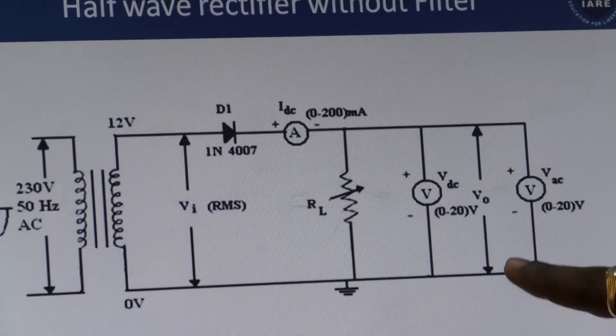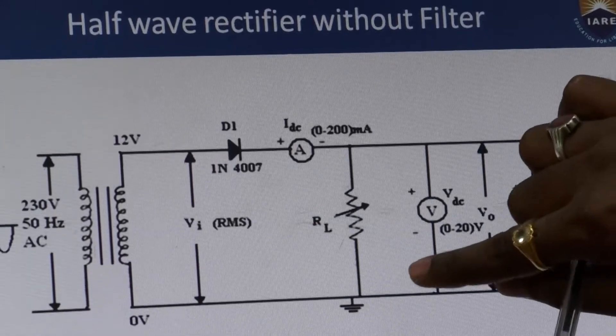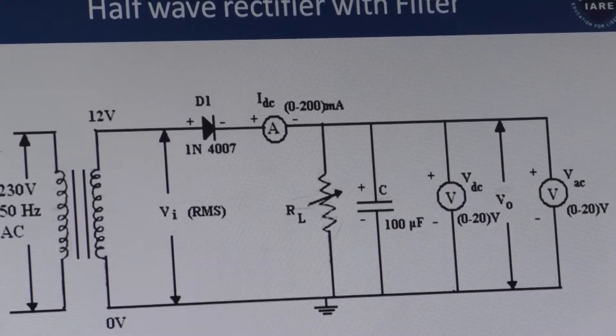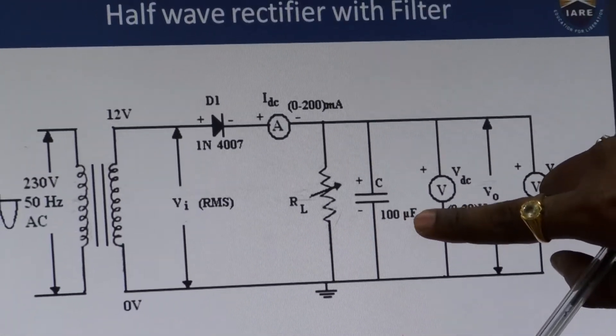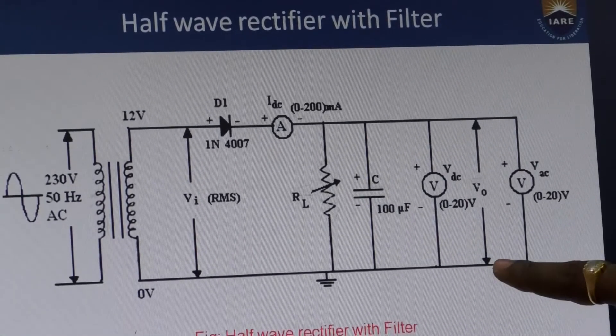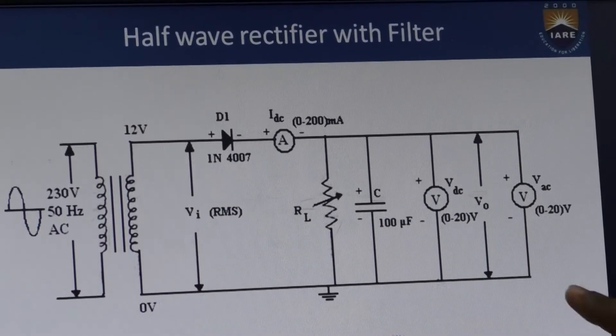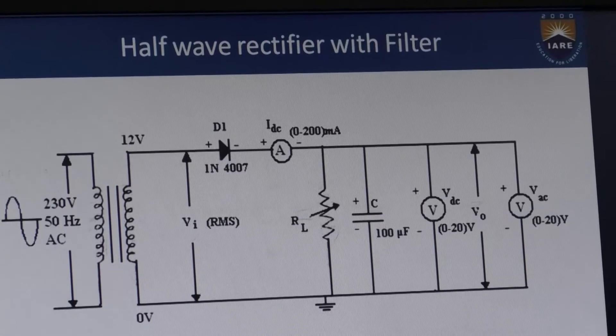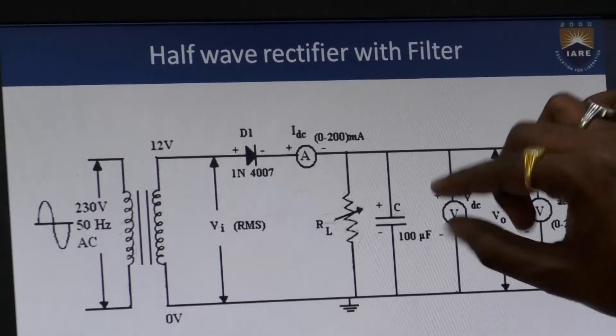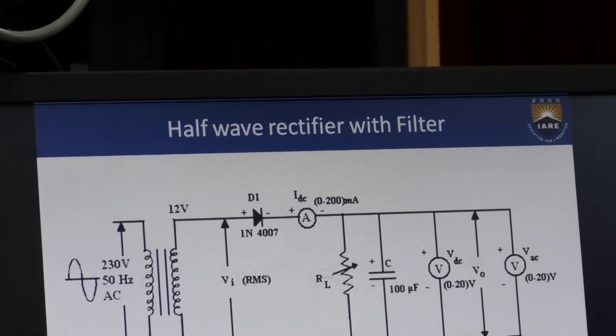Now again we are going to observe the half-wave rectifier with filter. We need to reduce the AC components using the filter concept. The only modification for half-wave rectifier with filter is adding one capacitor across the load resistance — that makes it a half-wave rectifier with filter. So to perform with filter, we are going to add a capacitor parallel with the load resistance. The remaining all connections are the same, there is no other modification.